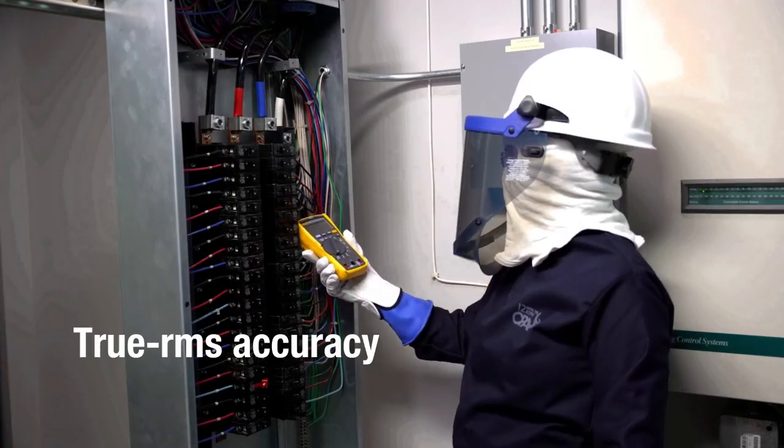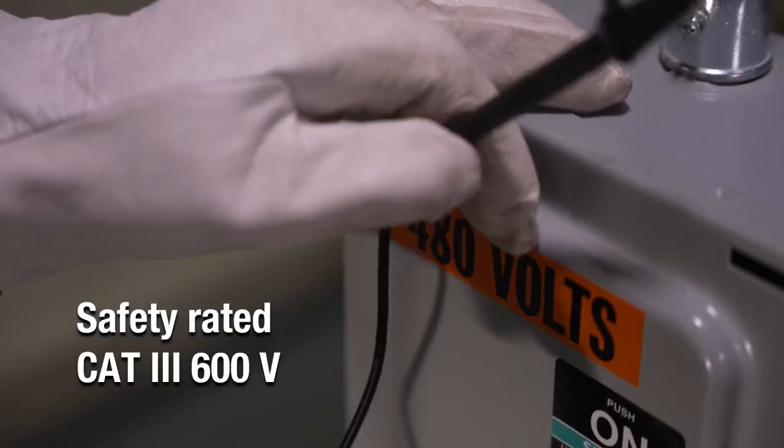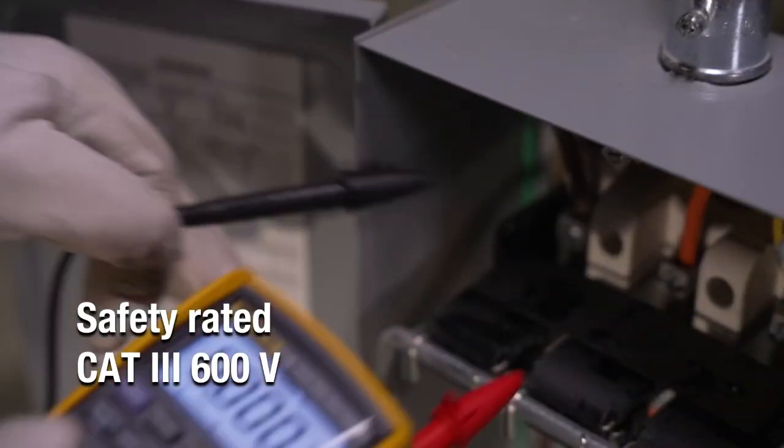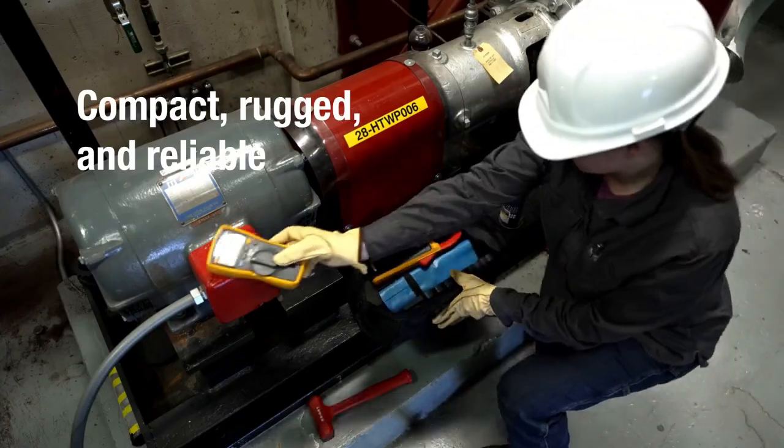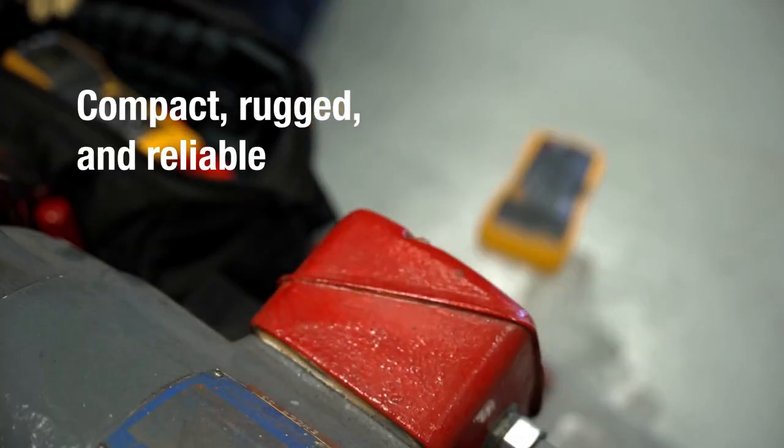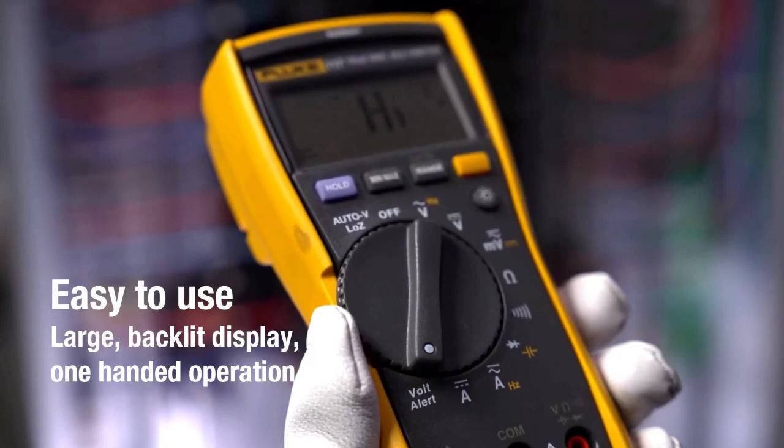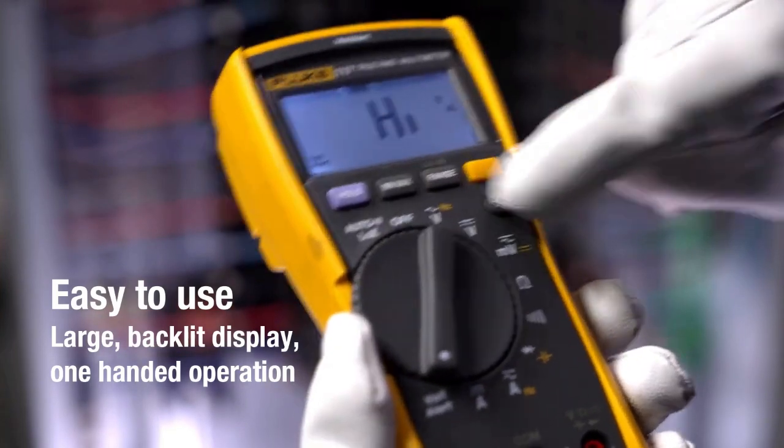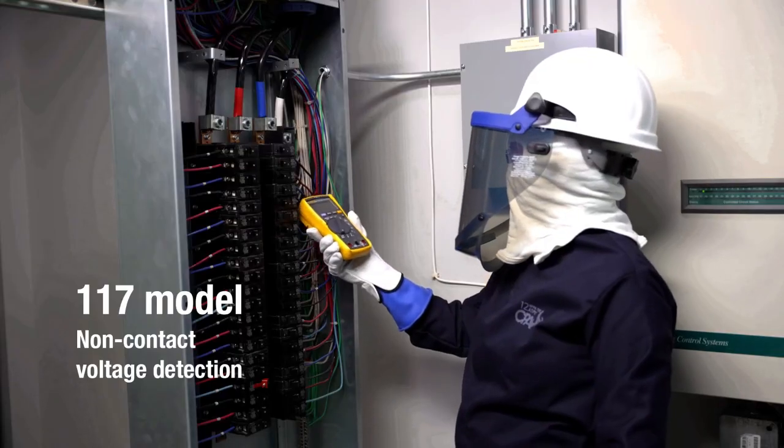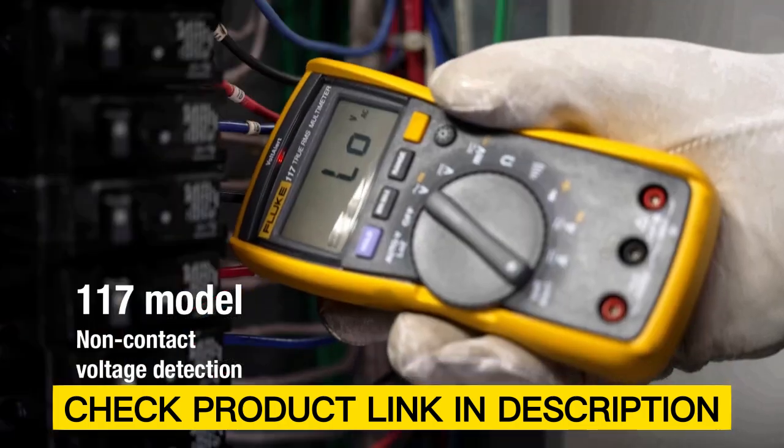While it doesn't include a current probe, one can be purchased separately to measure currents above 10 amps. Though lacking NPN PNP transistor testing and priced higher than hobbyist models, the Fluke 117 excels in home or commercial wiring tasks and precision electrical work. Check the product link in the description.